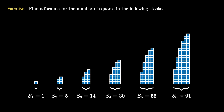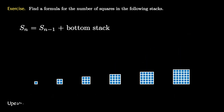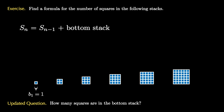Also like before, we see that this problem can be tackled recursively, as the first stack sits inside the second stack, the second sits inside the third, the third sits inside the fourth, and so on. This means that the nth stack has the number of squares in the (n-1)th stack plus the bottom layer. Therefore, we just need to count how many squares are in the bottom layer.